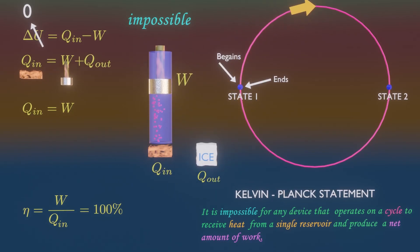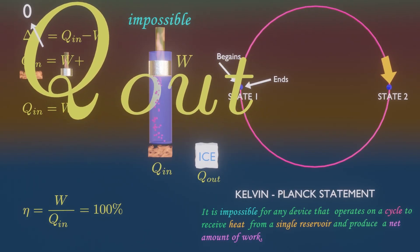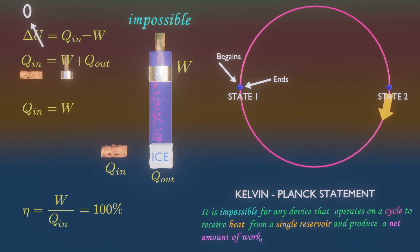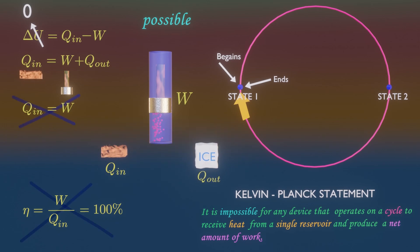But our statement of second law tells us that it must reject heat in order to operate on cycle. So the gas inside the cylinder must exchange heat with the cold environment as well as the heat source, and it can never achieve 100% thermal efficiency.